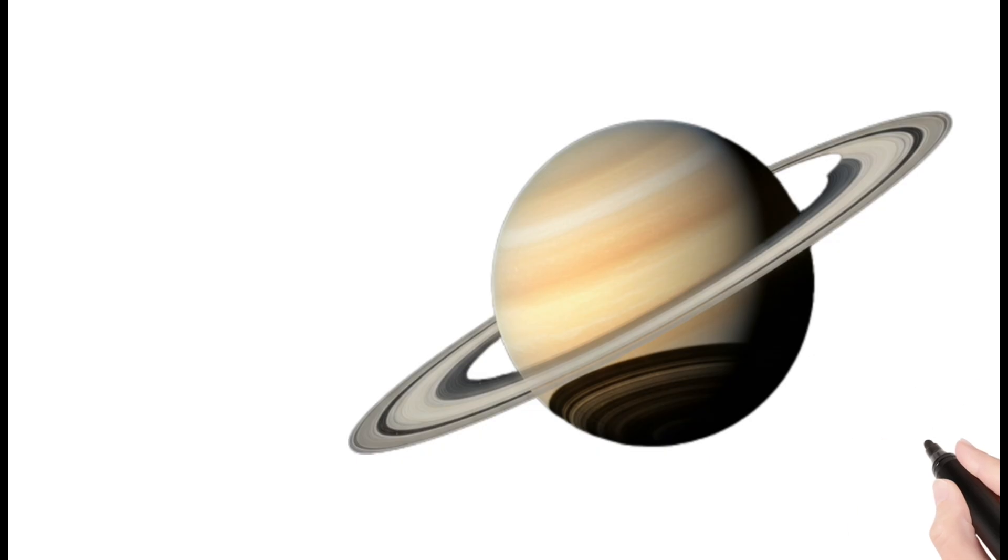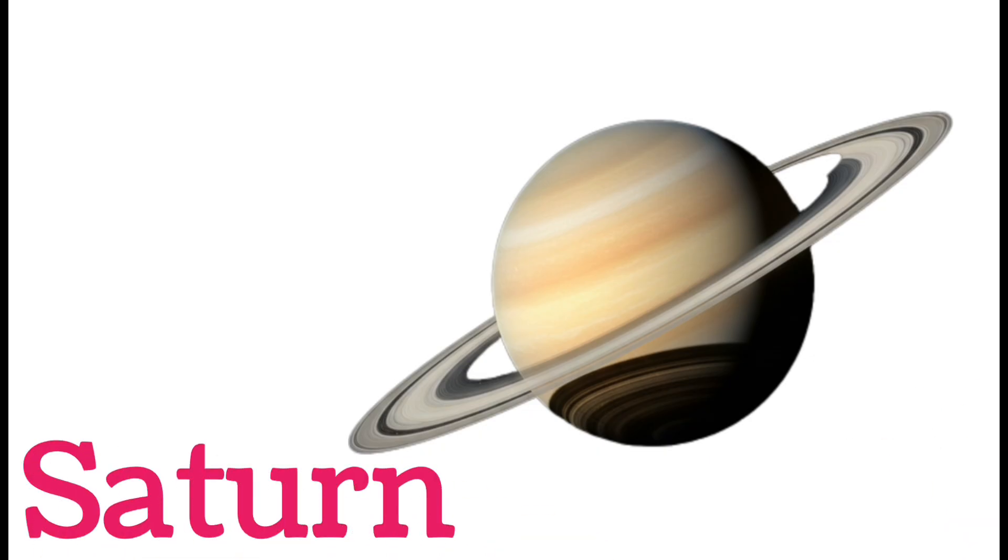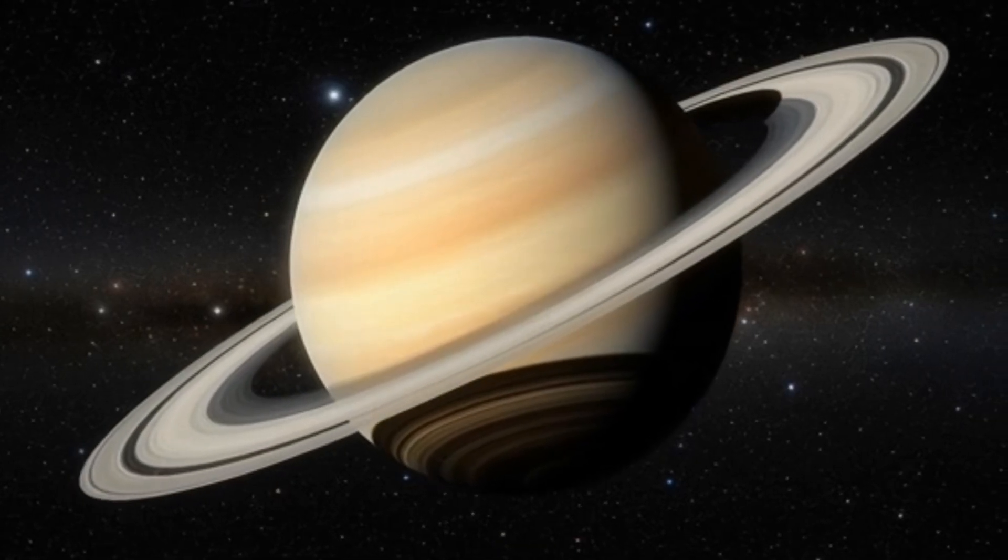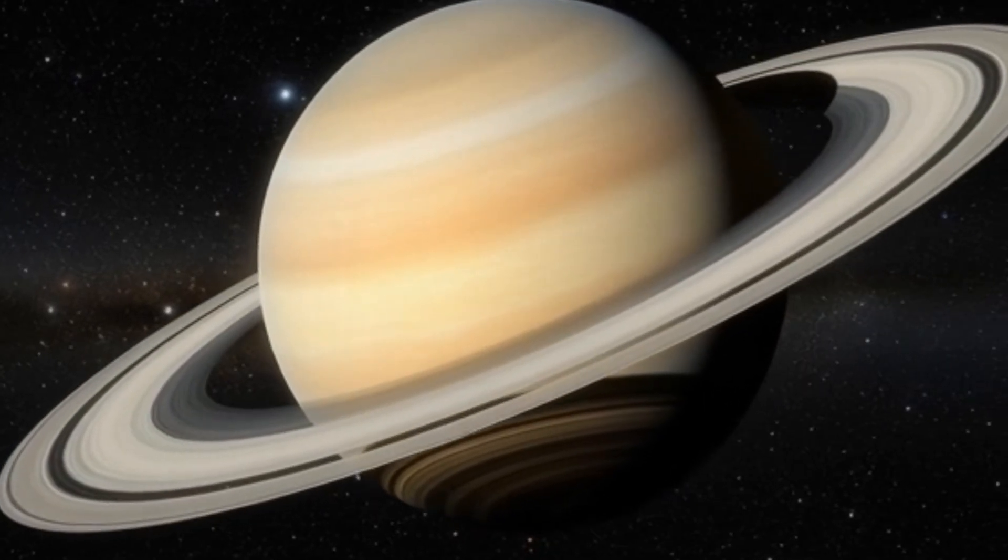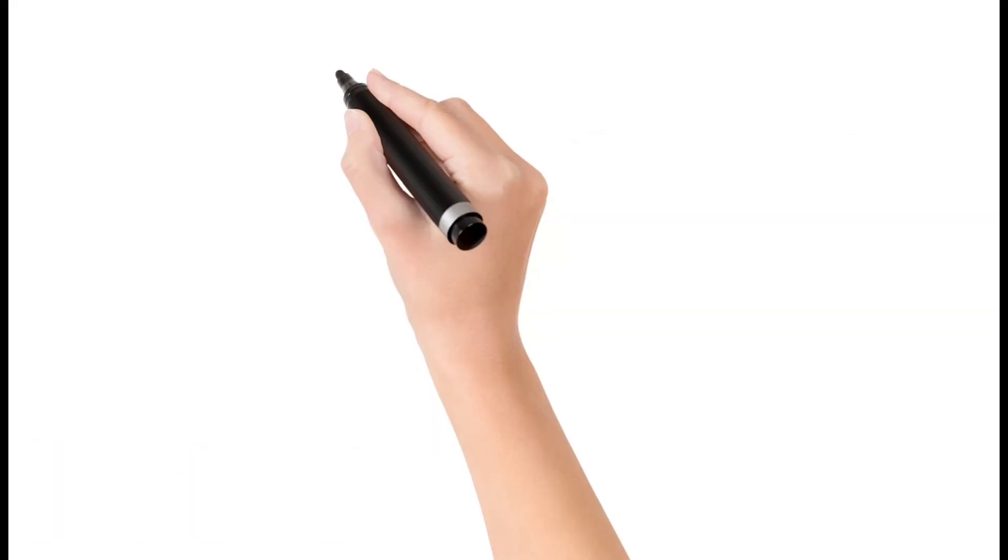Next, Saturn. Saturn is famous for its beautiful rings. It is a giant gas planet. Saturn has dozens of moons. It is very light for its size.